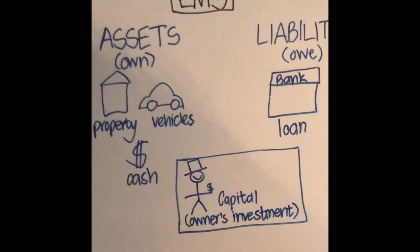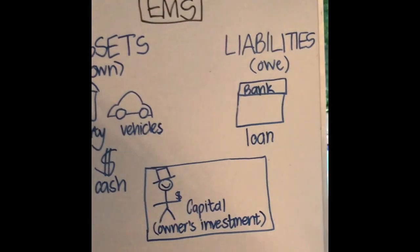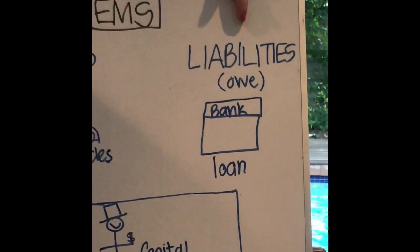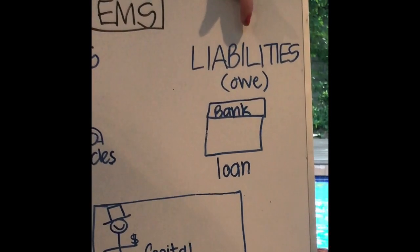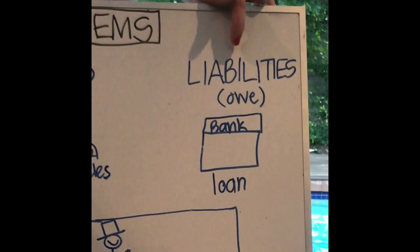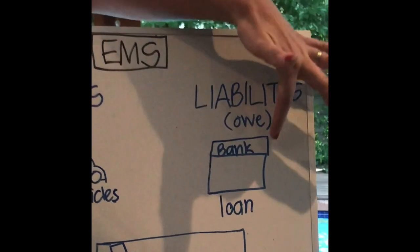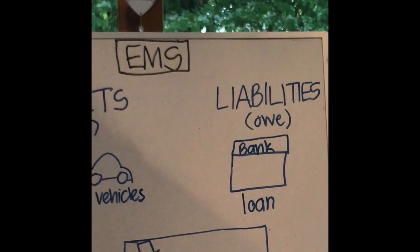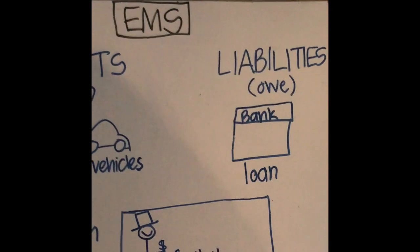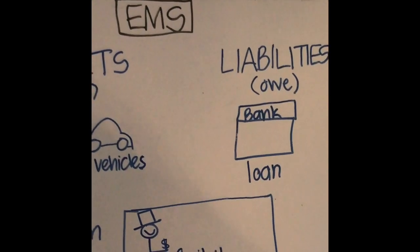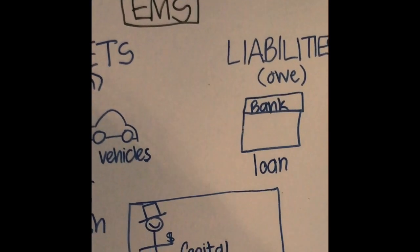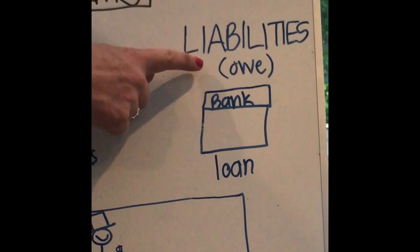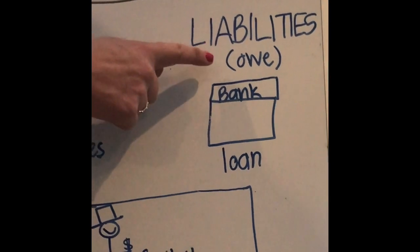On the other hand, you would also have liabilities, which is where you owe money to somebody else. For example, if you've taken out a bank loan or maybe you've bought stock on credit and you owe your suppliers. So liabilities is when you owe money to somebody else.